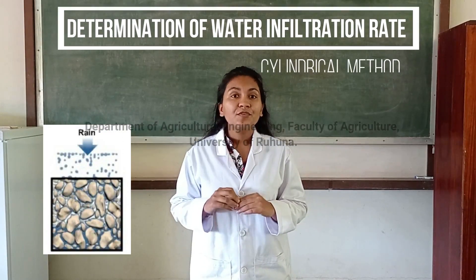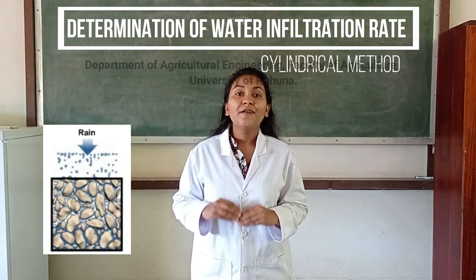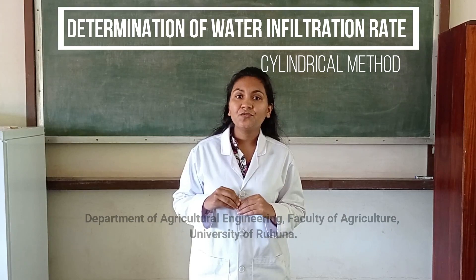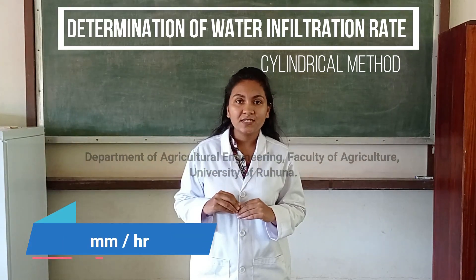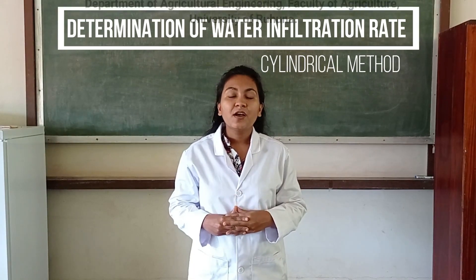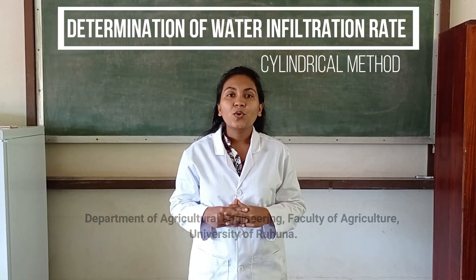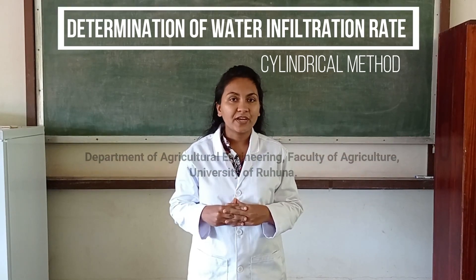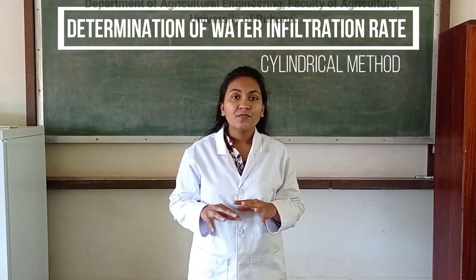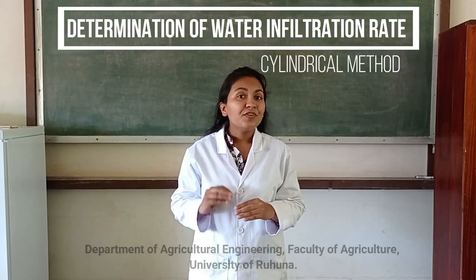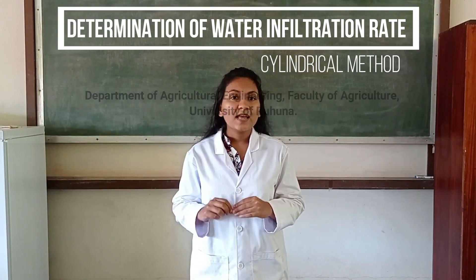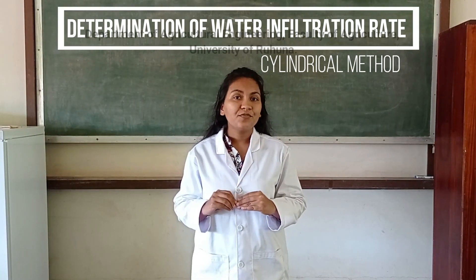Infiltration rate is the velocity or speed of water which enters into the soil. It is usually measured by the depth of water layer in millimeters that can enter into the soil in one hour. In dry soils, water infiltrates rapidly — this is called the initial infiltration rate. As more water replaces air in the pores, the water from the soil surface infiltrates more slowly and eventually reaches a steady rate. This is called the basic infiltration rate.